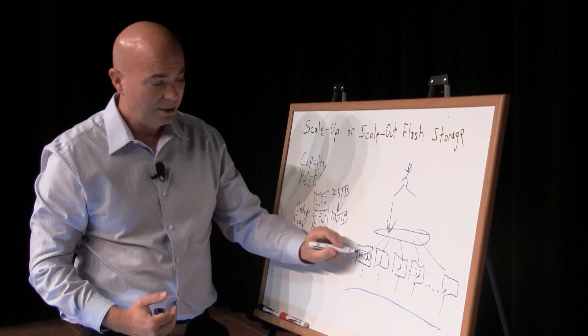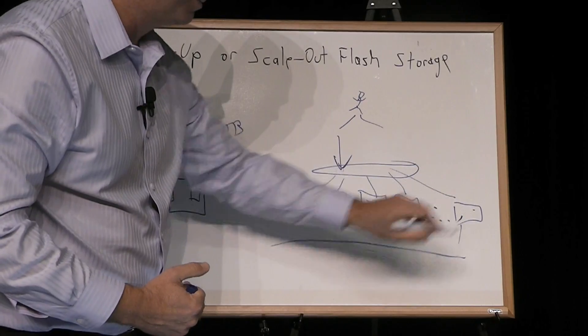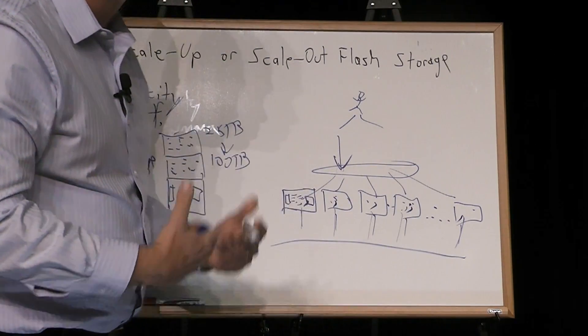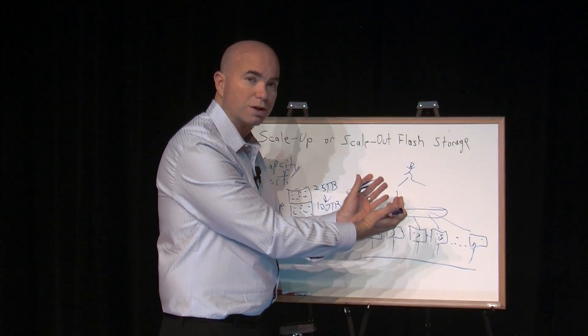To get around that, you have to increase the processing power of these systems. And you have to put a more sophisticated back-end network in. Well, guess what? That drives up the total cost of ownership again.